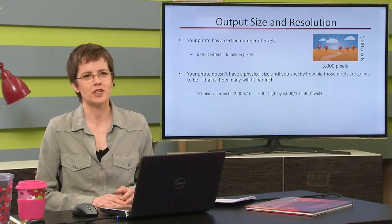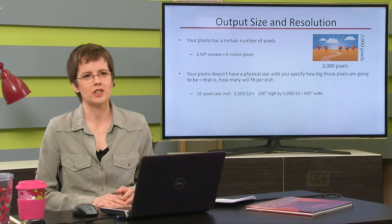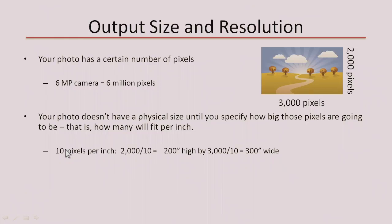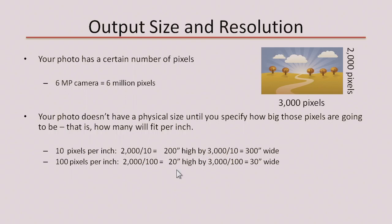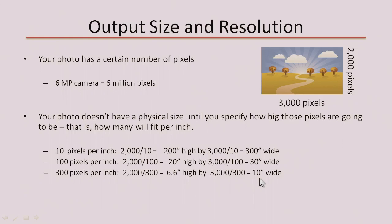Let's say we have 10 pixels per inch, so our pixels are fairly large. In that case, if I simply divide the height by the number of pixels per inch, I've got output that's 200 inches high by 300 inches wide. But if I pack in more pixels per inch — let's say 100 pixels per inch — I get a smaller result: 20 inches high by 30 inches wide. And then at 300 pixels per inch, I'm down to a 6.6 by 10 inch result. So I'm simply making the pixels smaller, packing more in per inch, so there are fewer inches to spread them across.